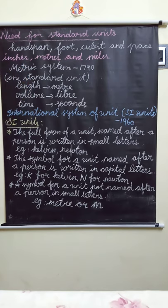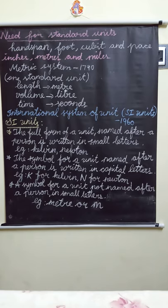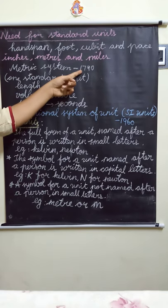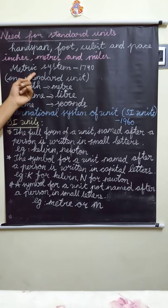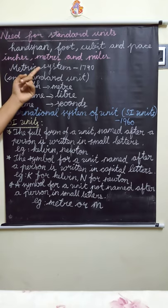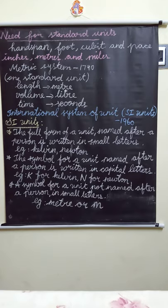Similarly, mass can be measured in kilograms, pounds and quintals. Because of such variation in results, we need to have some standard units. In 1790, a set of standard units called the metric system was introduced. This system has one standard unit for the measurement of a particular physical quantity. For example, length is measured in metres, volume in litres, and time in seconds.